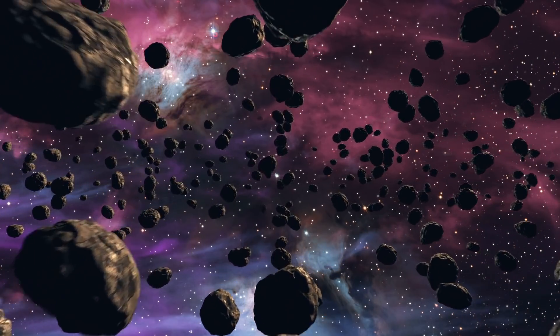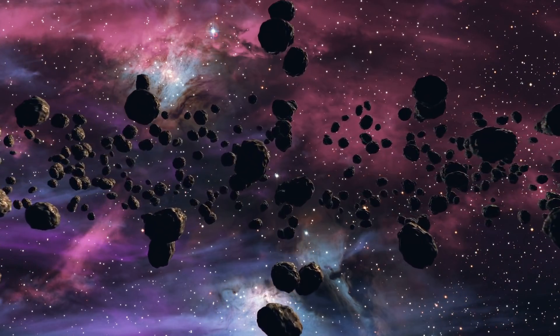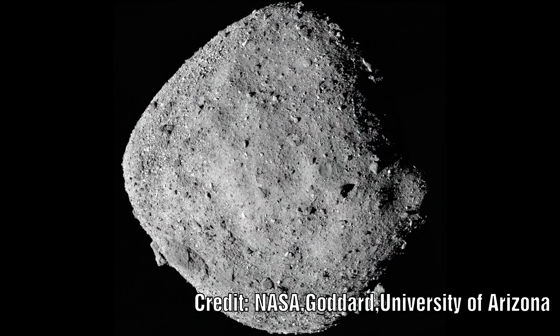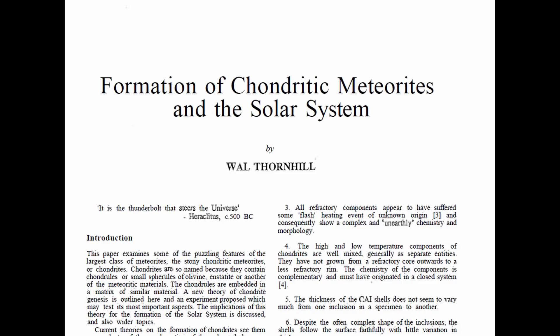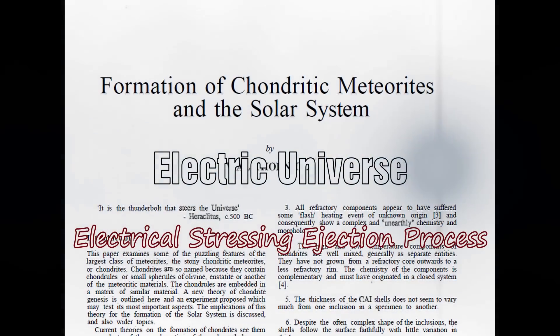Part of the mystery of our solar system are the chondritic meteorites – their strangeness may indeed be the key to understanding the formation process of our solar system. While researching the Beano asteroid I reached out to Wald to discuss the formation of meteorites in the Electric Universe and he sent me one of his older papers which for me was a missing link, filling in the understanding of this ejection process, the creation of these meteorites and possibly explaining some of the strange coincidences I mentioned in my last video. Let's explore Wald Thornhill's formation of chondritic meteorites and the solar system.